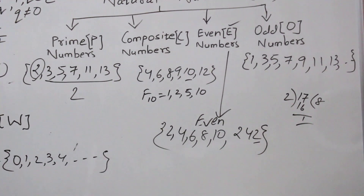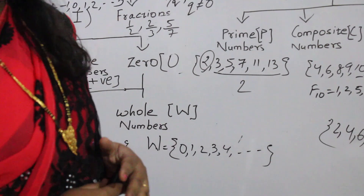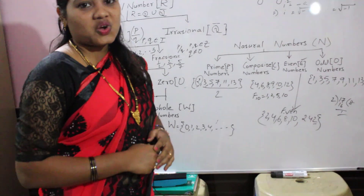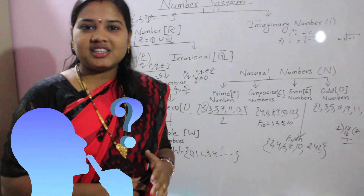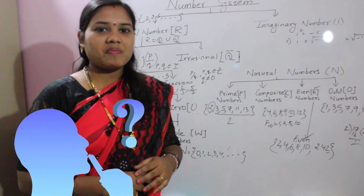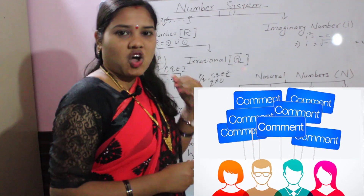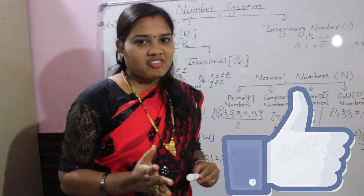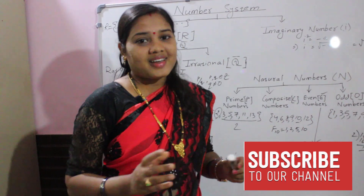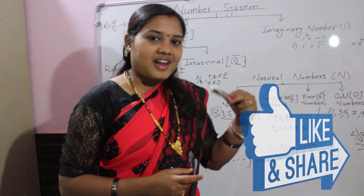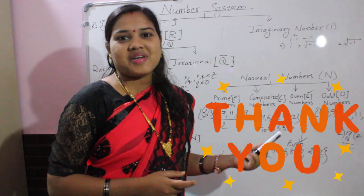So friends, this is a number system chart covering different types of numbers, their different properties, and examples. I hope you are very clear. If you have any doubts or suggestions, please comment. If you like my videos, please subscribe to my channel, press the bell button for latest notifications, and share my videos with your friends. Thank you.